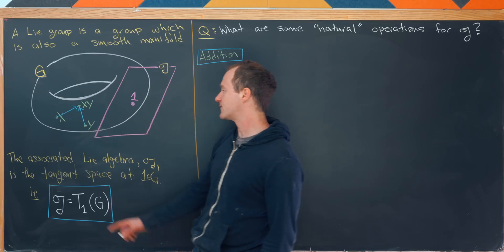I've drawn this here — I've arbitrarily put the identity right here. Capital G is a group, so we know it has an identity element, and we've constructed this tangent space to the group at that spot. Here's some notation: we read this as G is the tangent space of capital G at the identity. Now I'd like to look at a couple of interesting questions — first of all, what are some natural operations for elements of the Lie Algebra?